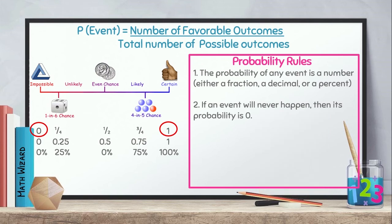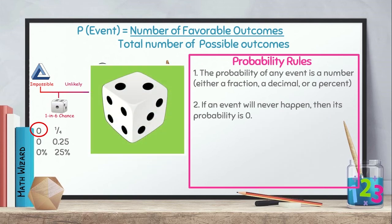Next, ano naman ang ibig sabihin ng word na unlikely? Unlikely, possible siya na mangyayari pero maliit lang yung chance. Parang when I flip or when I roll this die, ano yung probability na ang makukuha ko is 1. So, unlikely to happen siya. Possible na mangyayari pero maliit lang yung chance.